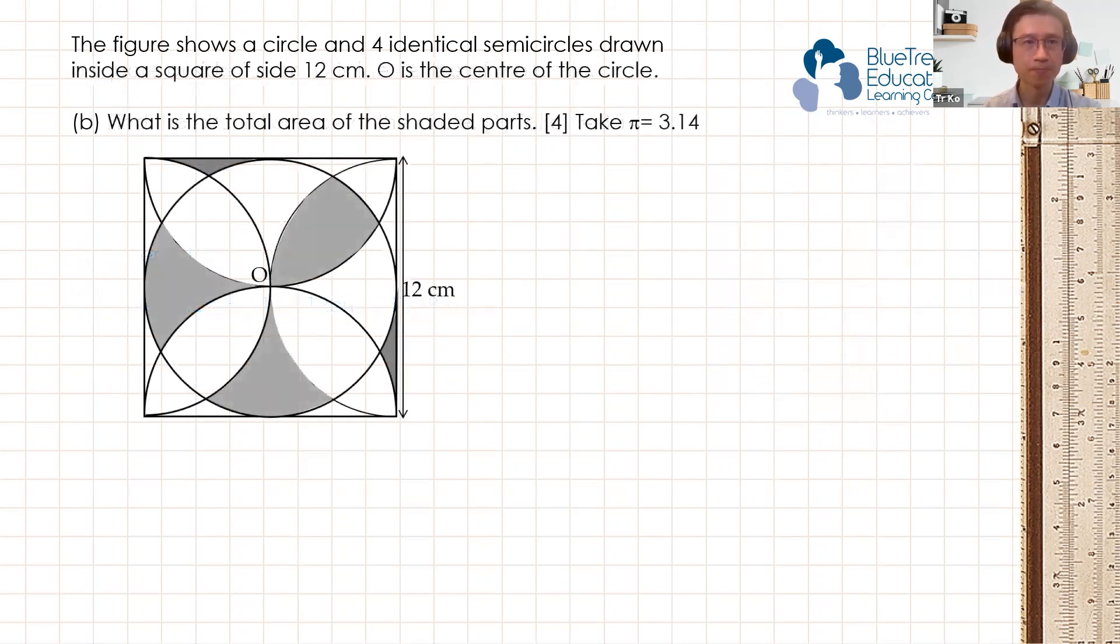Let's look at part B. Part B asks, what is the total area of the shaded parts? Take pi as 3.14. So I'm going to redraw this diagram again by using cut and paste.